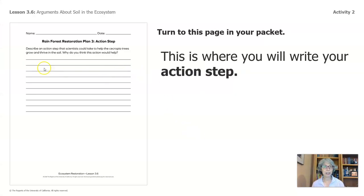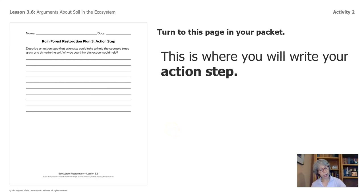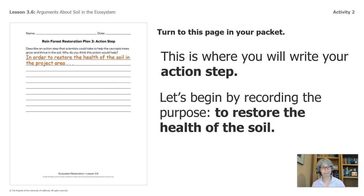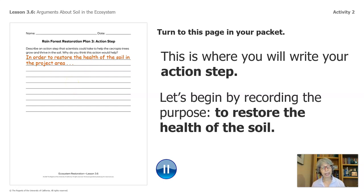Turn to this page in your packet, Rainforest Restoration Plan 3, action step. This is where you will write. And again, if you do not have the packet, paper and a writing utensil is all you need. This is where you'll write your action step. Let's begin by recording the purpose: to restore the health of the soil. That's important to start with a purpose. We'll see you back in a bit.